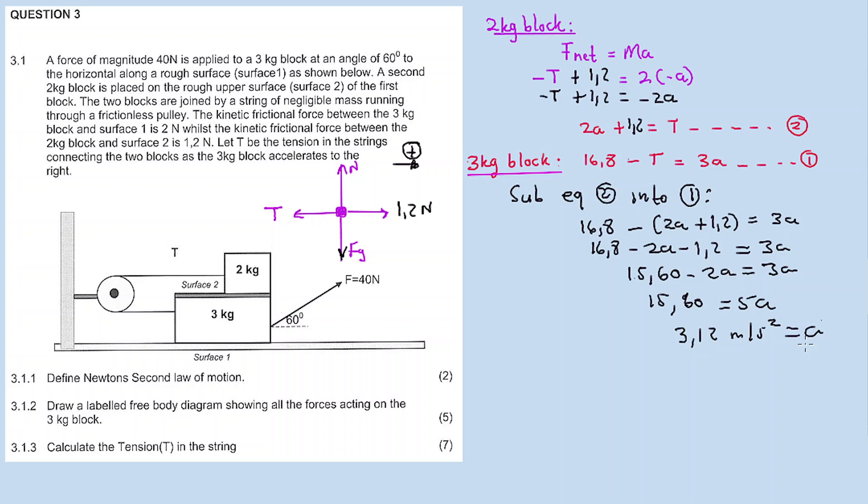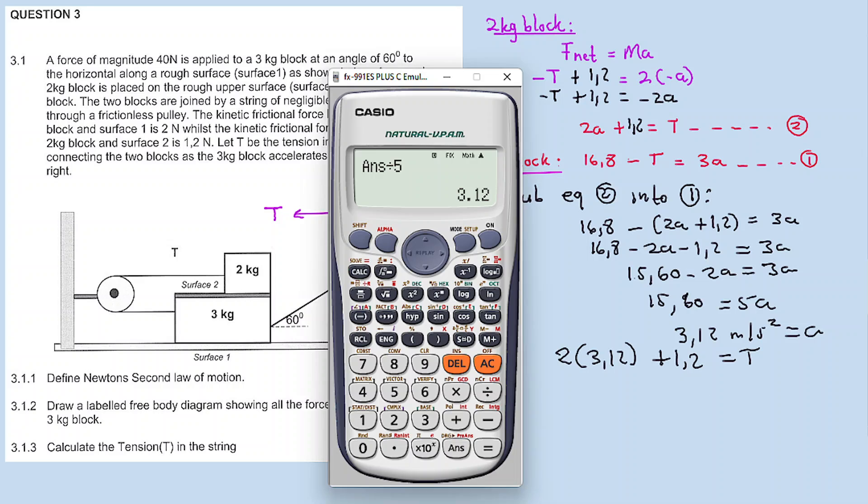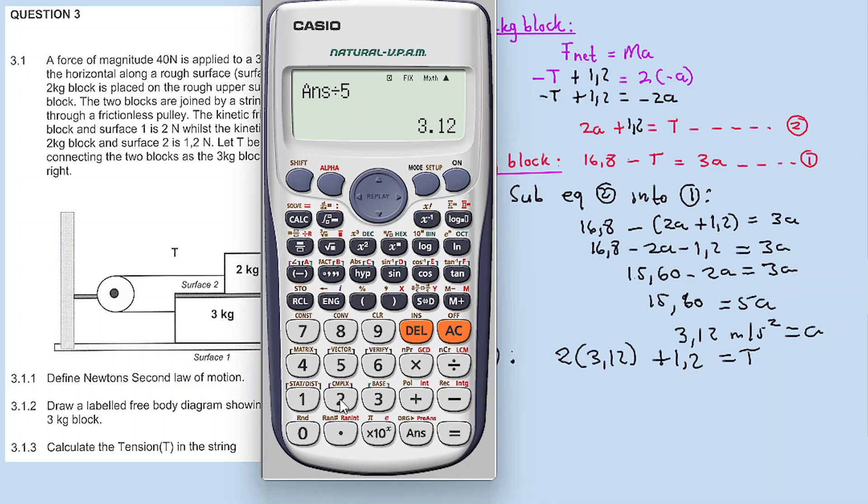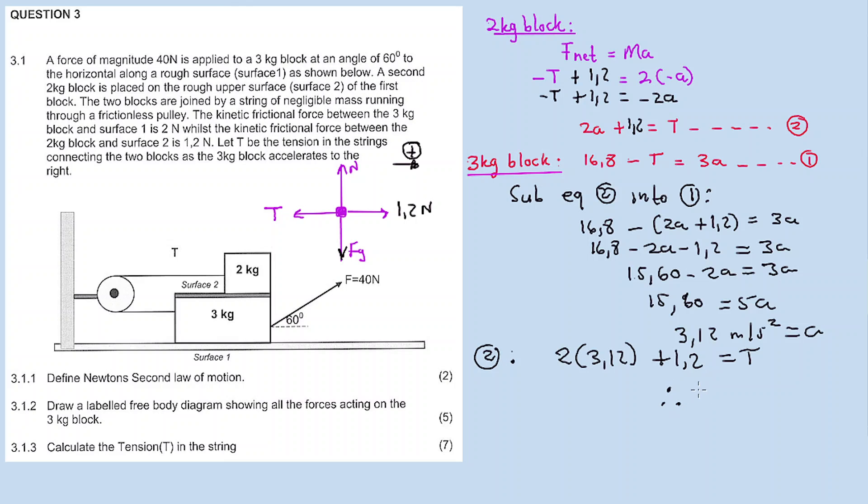We take the acceleration and substitute into equation 2. Where there's a, we put 3.12 plus 1.2 equals T. Therefore, it's 2 times 3.12 plus 1.2, which equals 7.44. Our tension is equal to 7.44 newtons. This is our answer for 3.1.3.